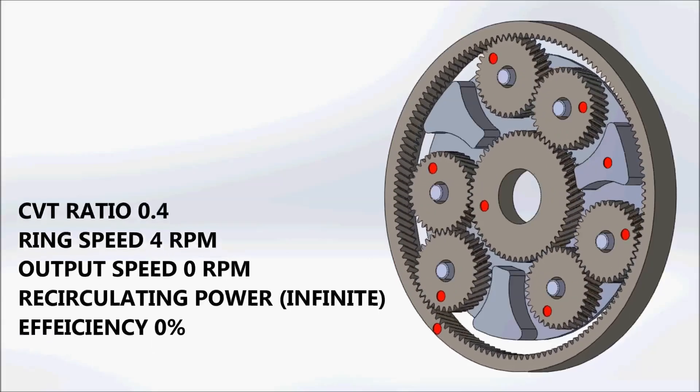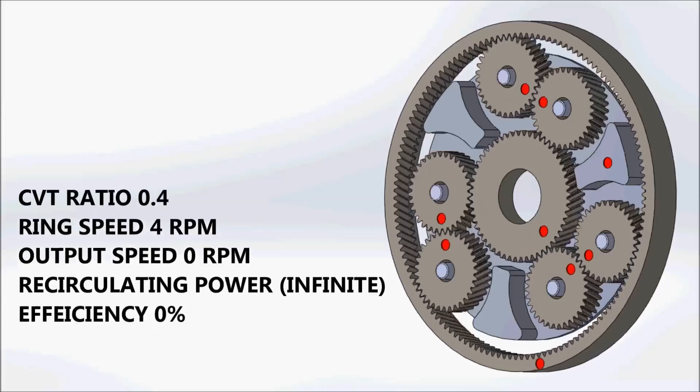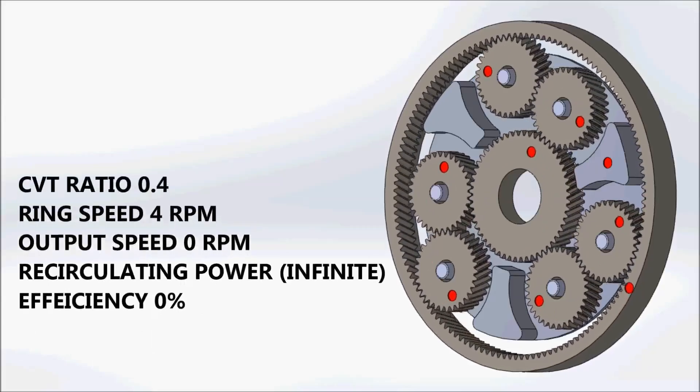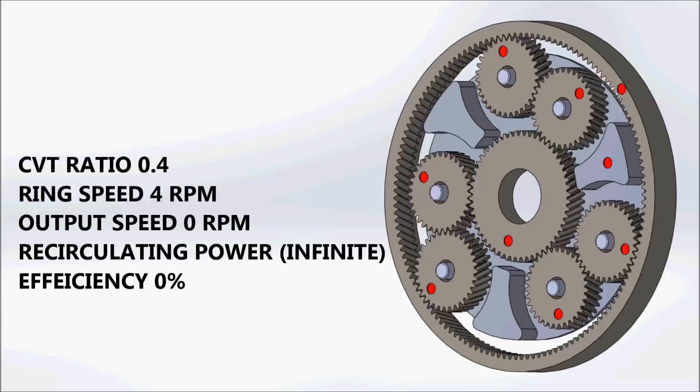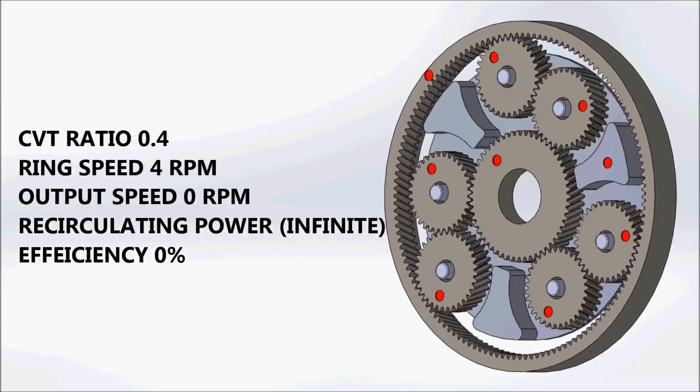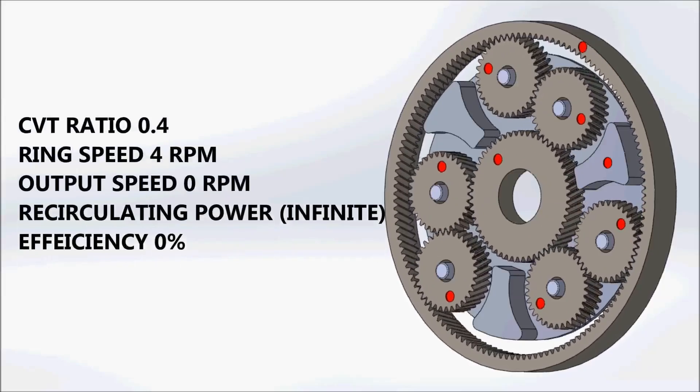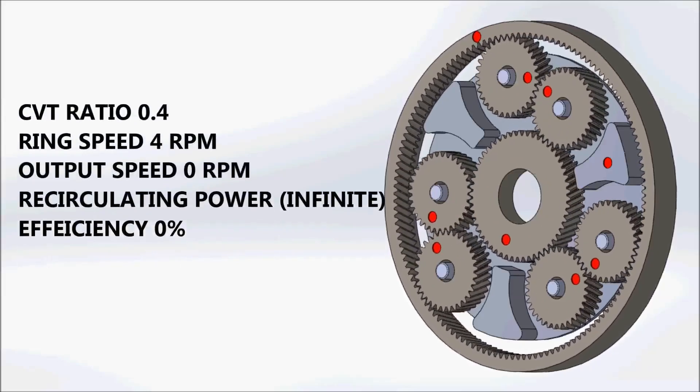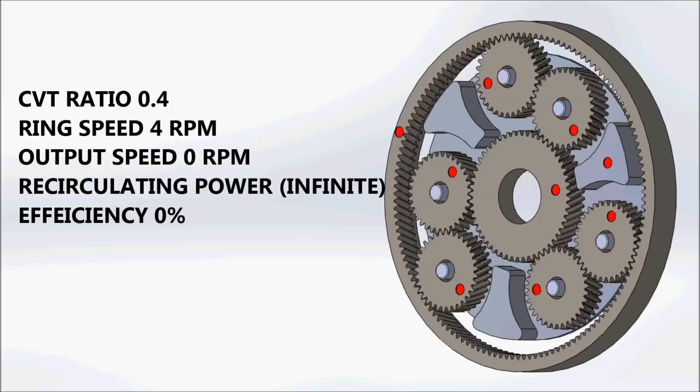The output torque in this state is theoretically infinite, created by recirculating power, not the engine itself. Torque protection systems must be put in place to protect the CVT, the epicyclic gear set, and the vehicle itself from over-torque.